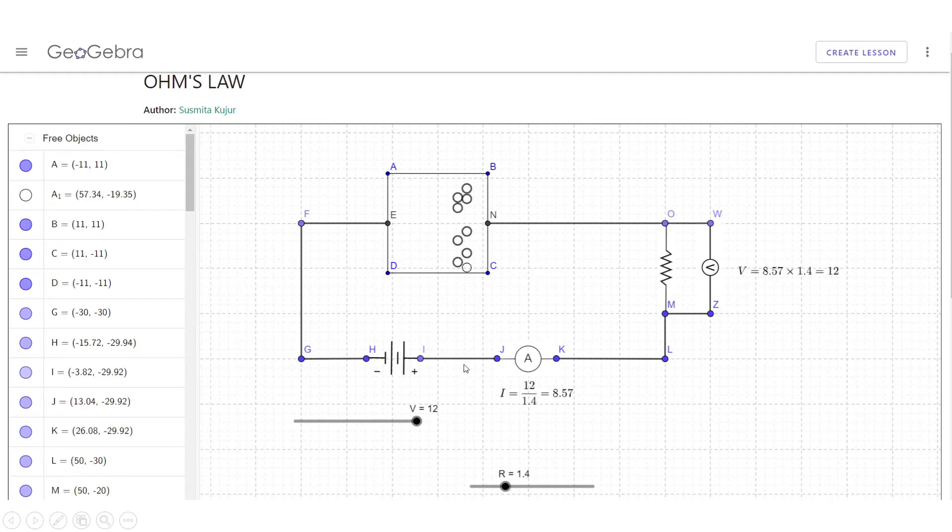The ammeter here is used to measure the flow of current through a node, and the voltmeter here is used to measure voltage across two nodes. Here it is across resistor. Lastly, the sliders are used to control the inputs of power supply and resistor.